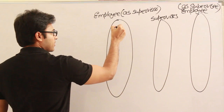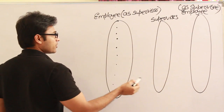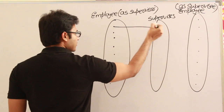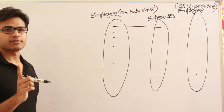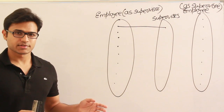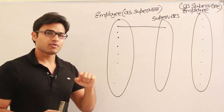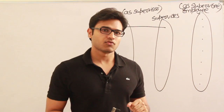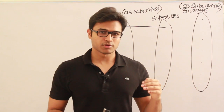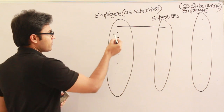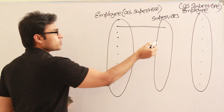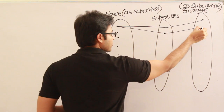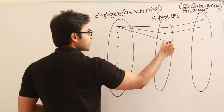Now there are employees on both sides. Assume the specification is that every employee reports to only one employee — you are not going to have two bosses. So one particular employee, say E1, is going to supervise E2, and the same E1 might also be supervising E3. So E1 is supervising E2 and E3, which means E2 reports to E1 and E3 reports to E1.